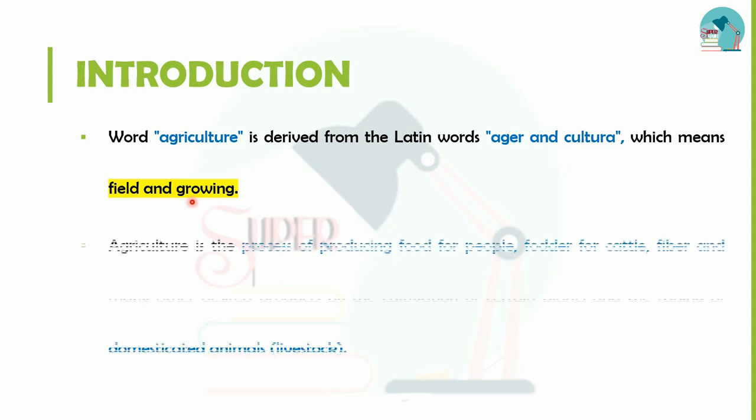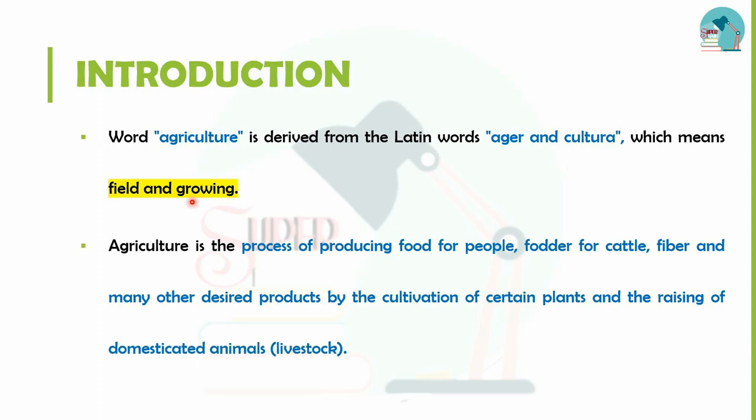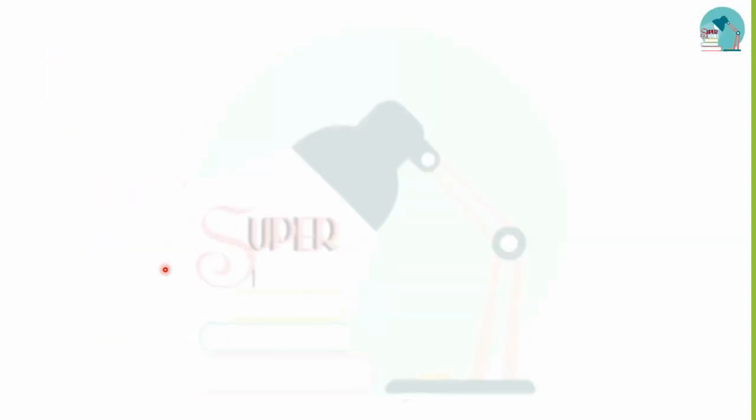So what does agriculture mean? It refers to food, cattle, fiber, plants, and domestic animals — we raise these, and that is agriculture.